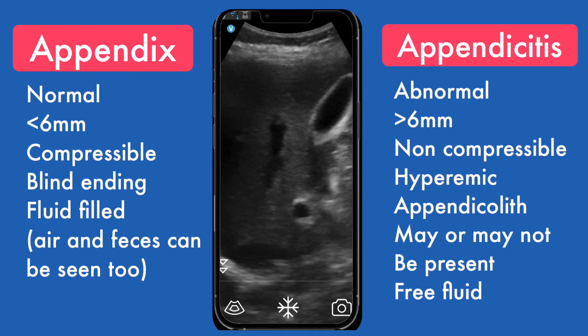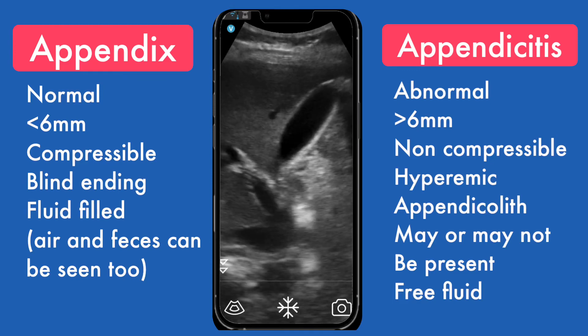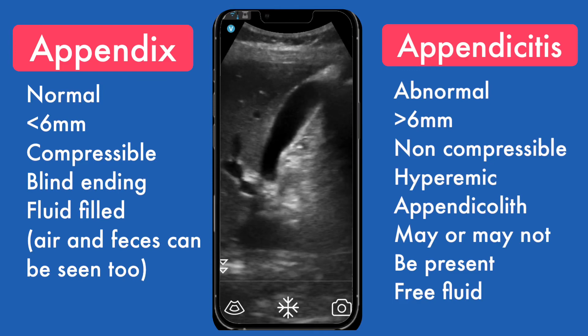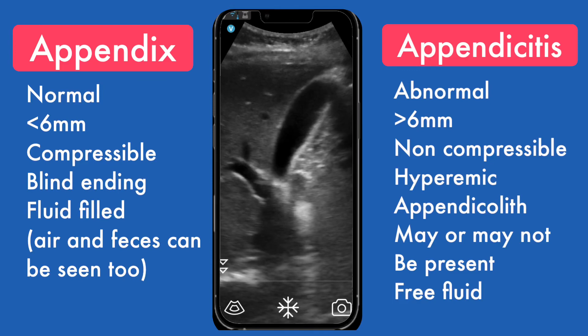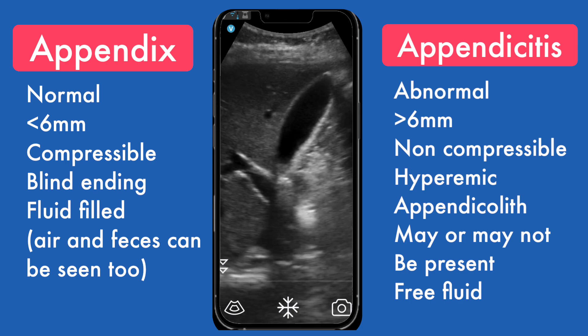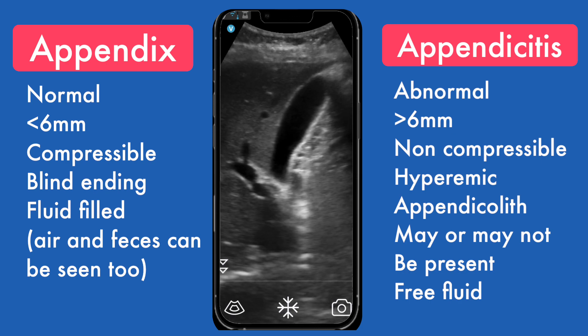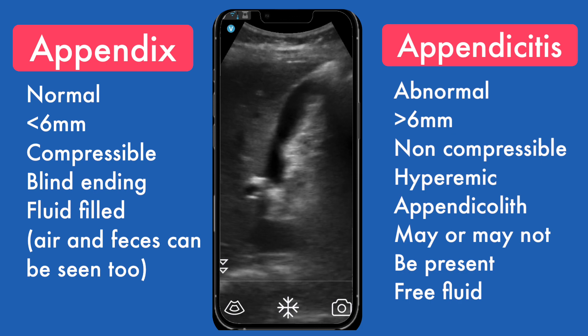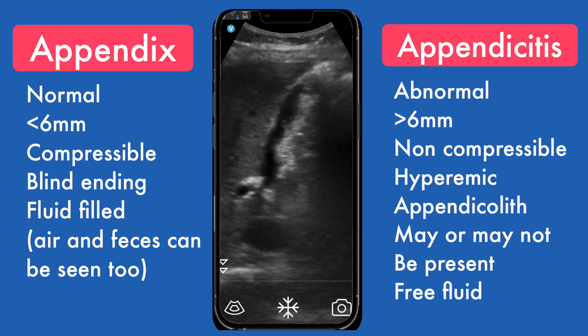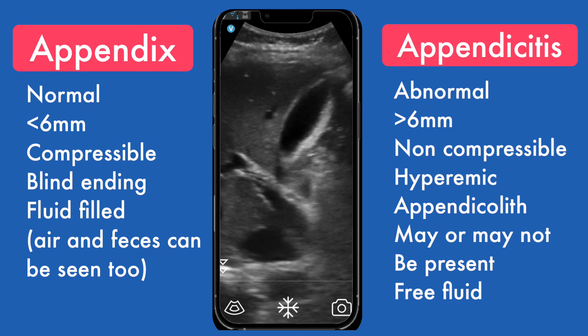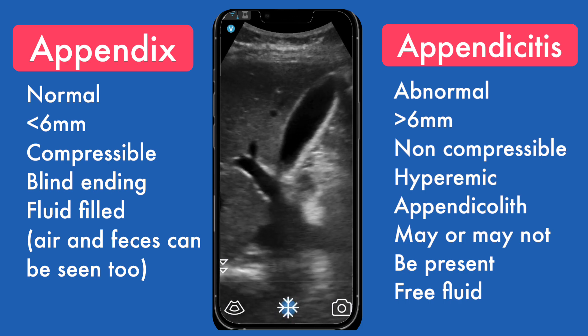I'm going to show you the protocol I do for the appendix. I begin in the right upper quadrant where the gallbladder is, and start taking images of the gallbladder. I take a few sagittal images to make sure there's no gallstones. You can see this gallbladder is not contracted — it looks normal.